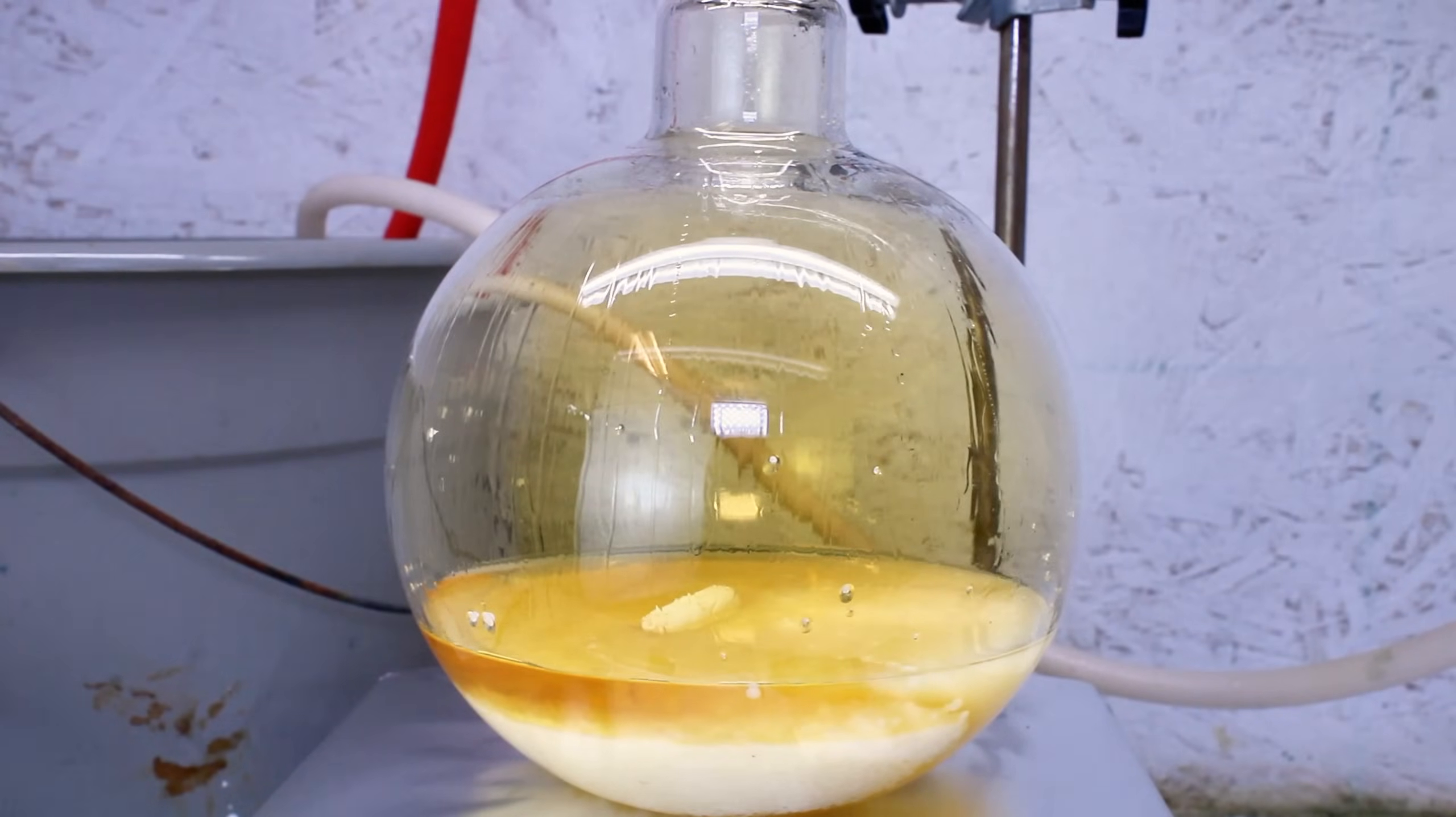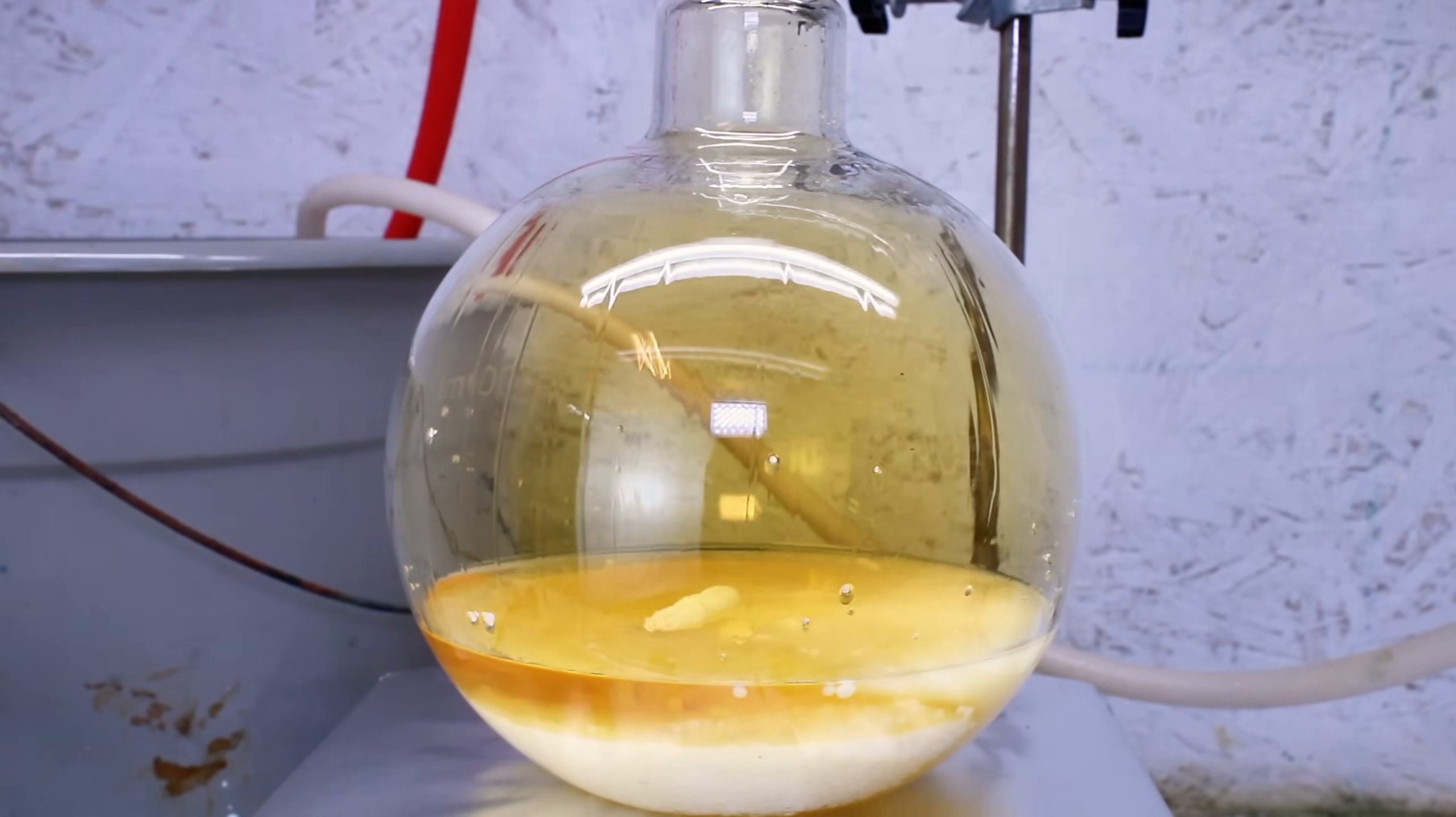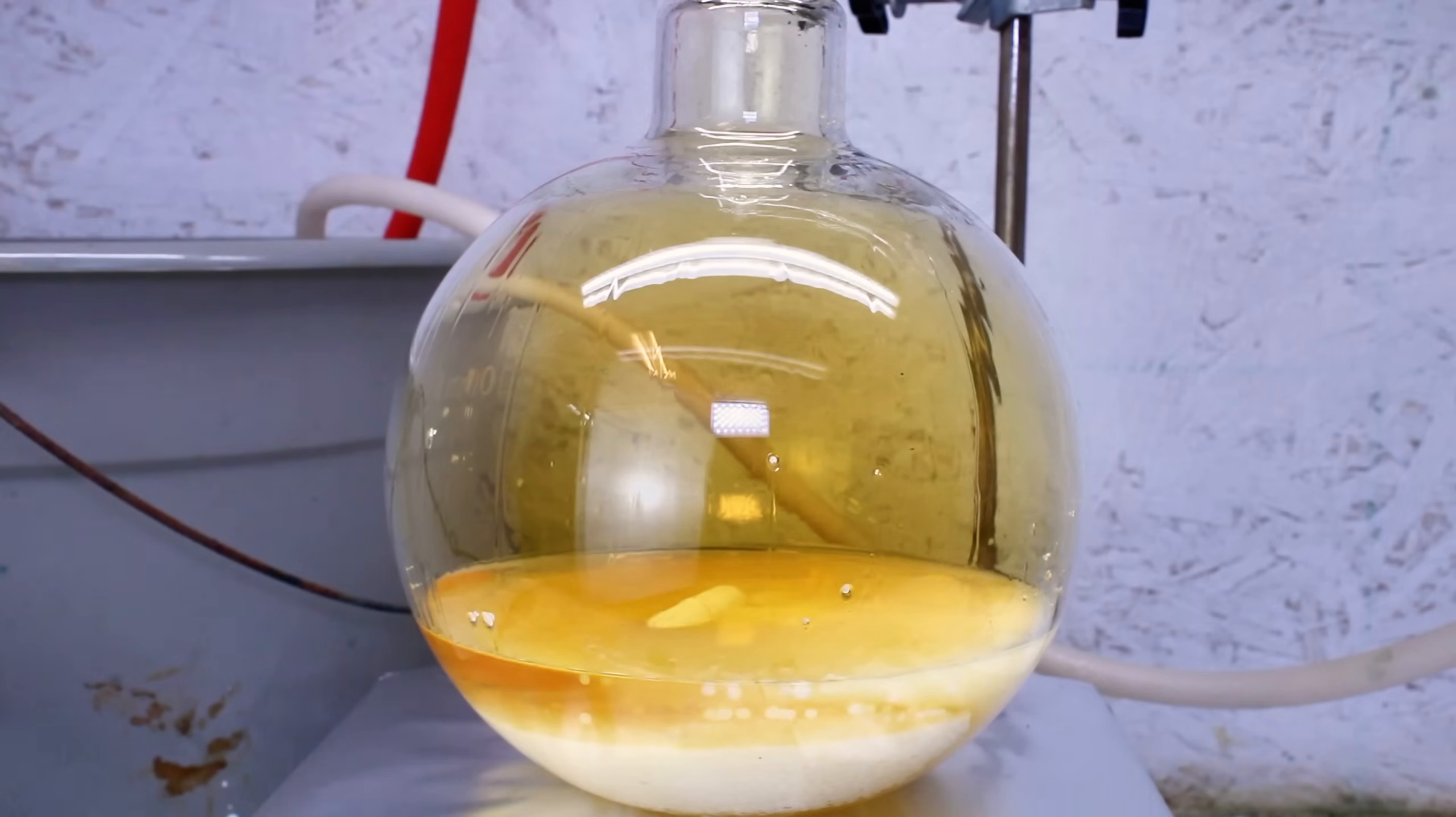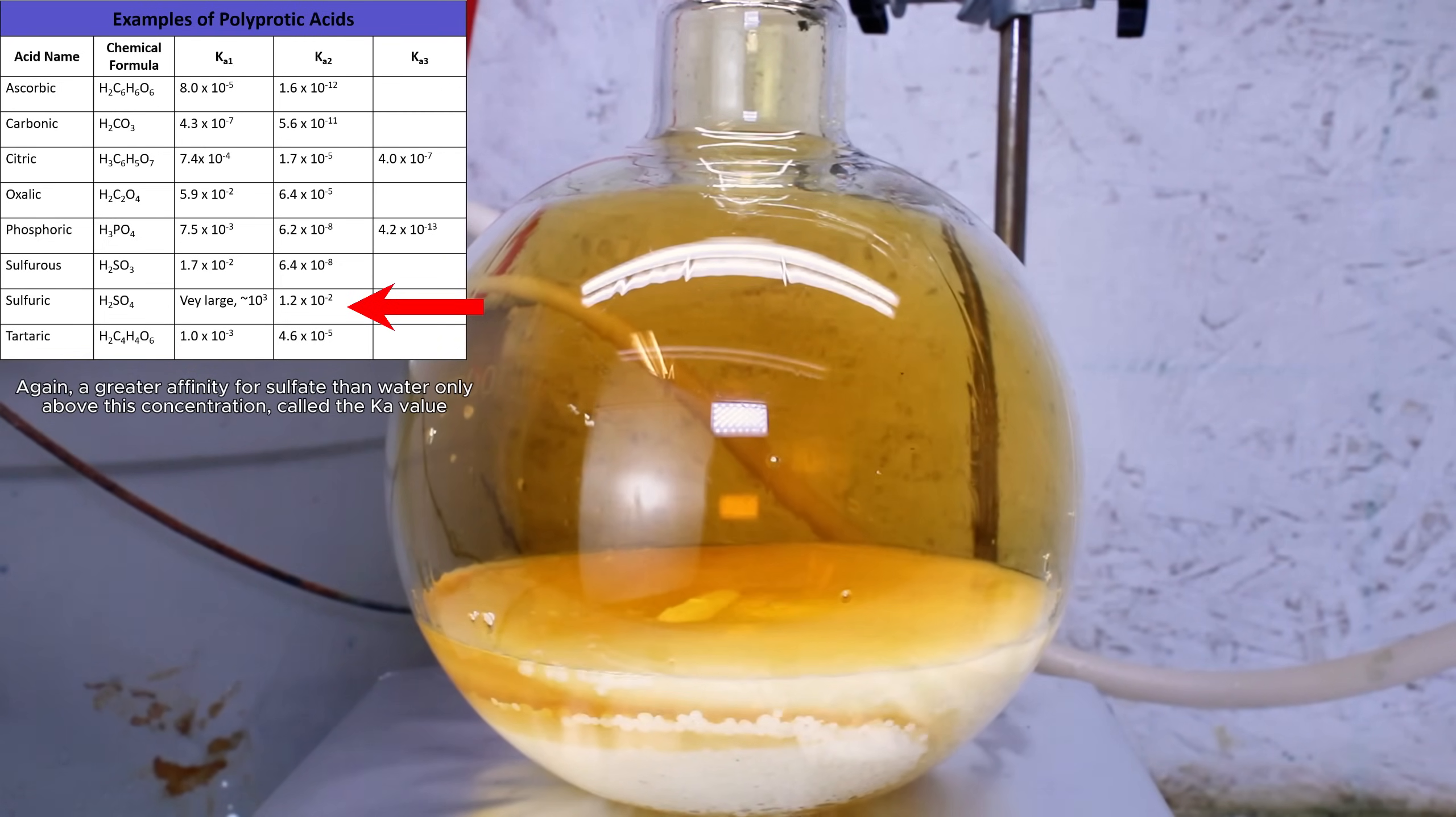However, if this reaction is conducted above 200 degrees Celsius, the two will react forming two molecules of nitric acid and the neutral salt sodium sulfate along with a good deal of foaming. This is because sulfuric acid is actually what's called a polyprotic acid, meaning it has multiple hydrogen to give up. The first hydrogen is given up very strongly, but the second actually has a greater affinity for sulfate than water, making it a weak acid.